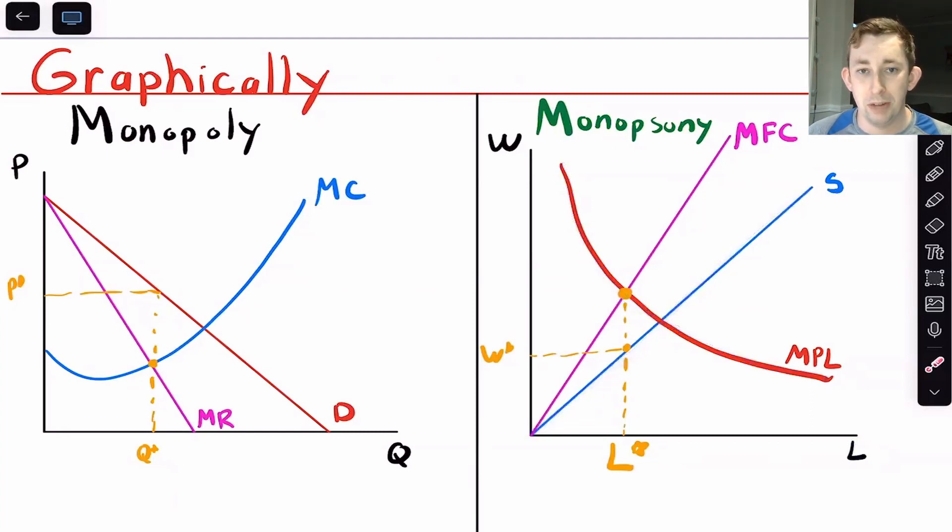Instead of the marginal revenue curve which falls below the demand curve, we're going to have a marginal factor cost which is going to be above the supply curve. That's how we're going to find out how many people to hire. We take where marginal product equals marginal factor cost and go down to the supply curve. This is the supply of labor. If it's helpful, you can think about this supply curve as the demand for jobs.